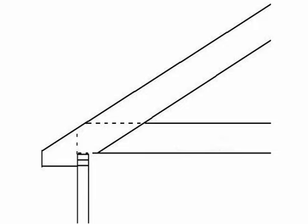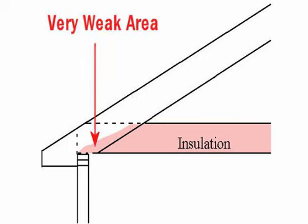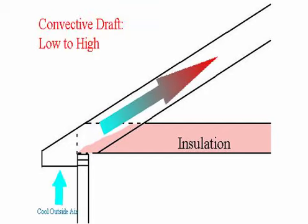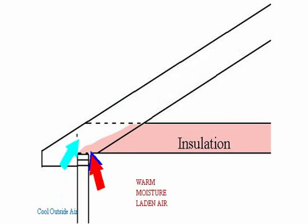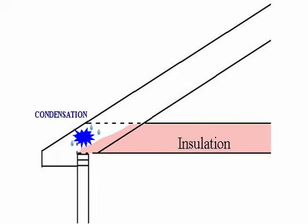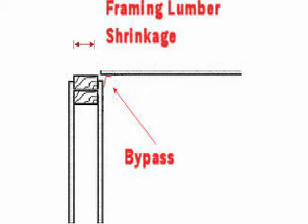Unless this area is detailed properly with baffles and spray foam insulation, you will have problems. As you can see in this diagram, there isn't much insulation there — it's a very weak area. When you combine the intake air from outside and the air that leaks from the conditioned space through that bypass at the corner, they collide and you get condensation — like your breath on the windshield in wintertime — liquid moisture, which spurs mold growth and mats down your insulation.